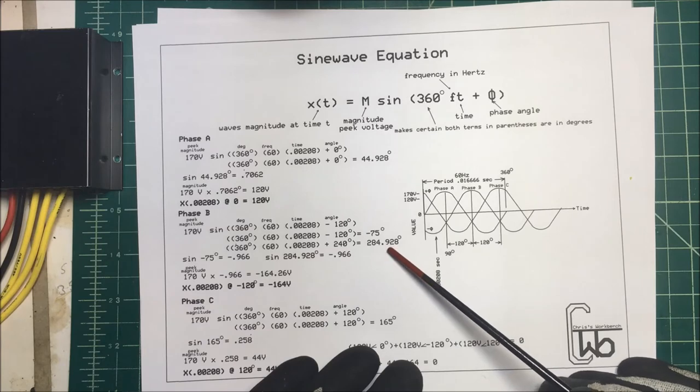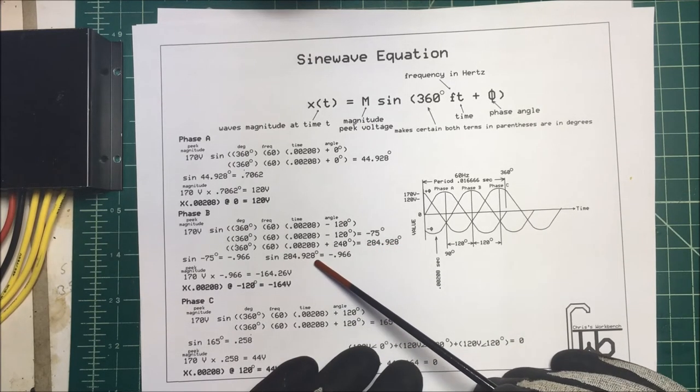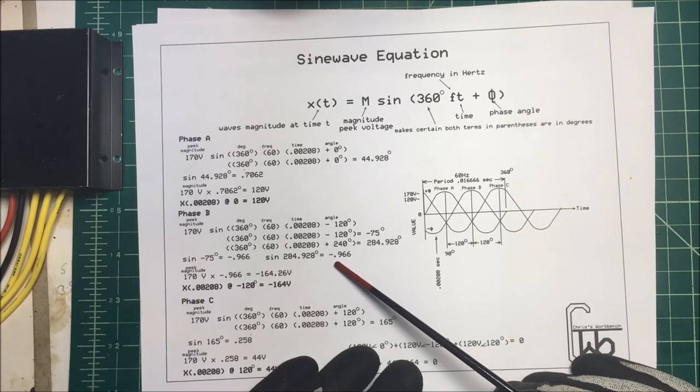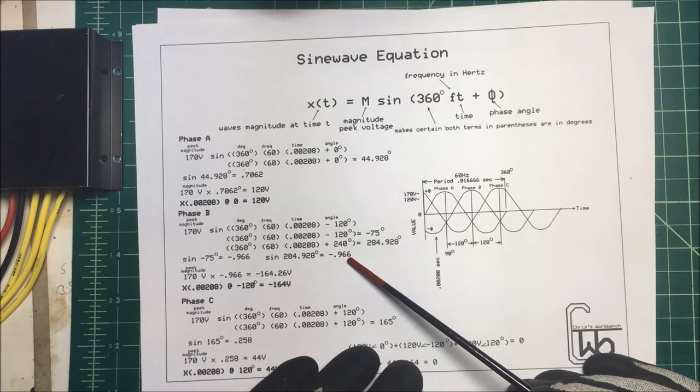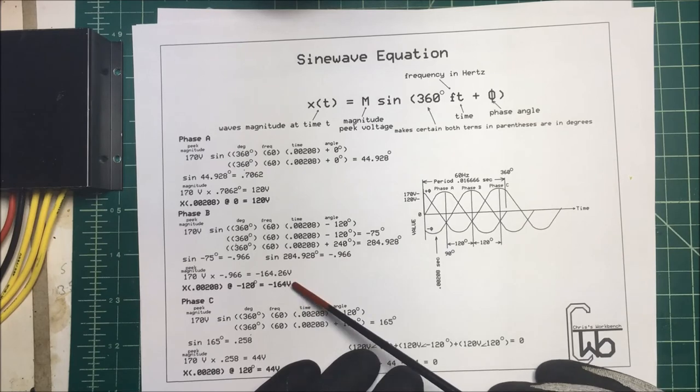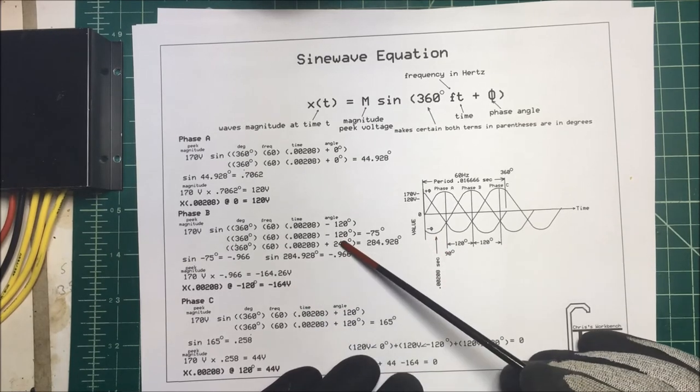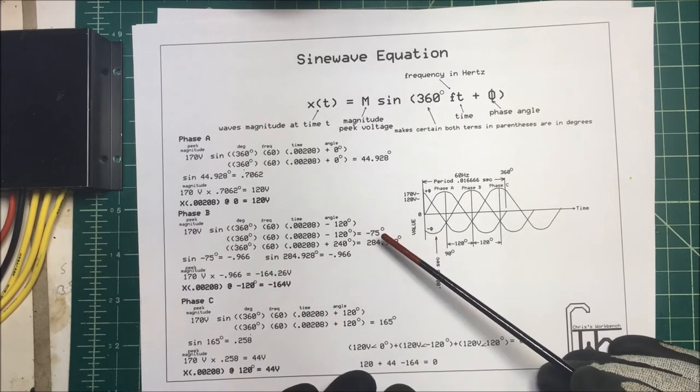If we do the same formula here, add this up and use 240, then it comes out to 284.928. But if you take the sine of 284.928, that's going to be minus 0.966, going to be the same thing. So we have our same voltage down here. You can do it either way.